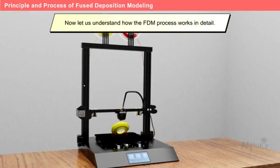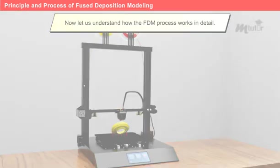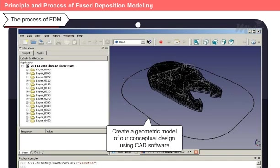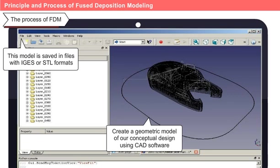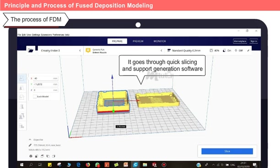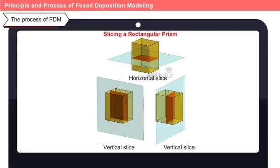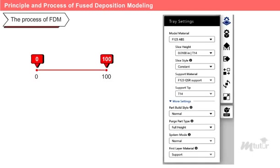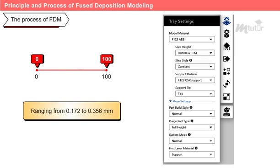Now let us understand how the FDM process works in detail. First, we create a geometric model of our conceptual design using CAD software, and this model is saved in files with IGES or STL formats. Next, the CAD file is imported into the system, where it goes through quick slicing and support generation software. This software slices the model into horizontal layers. We can adjust the slice thickness, typically ranging from 0.172 to 0.356 millimeters, depending on the requirements of our models.